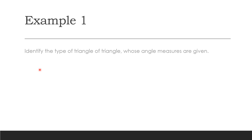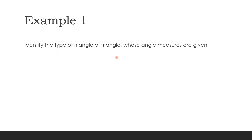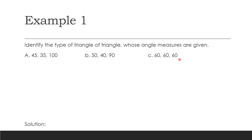Example: Identify the type of triangle whose angle measures are given. A: 45°, 35°, 100°. B: 50°, 40°, 90°. C: 60°, 60°, 60°. Solution: A is an obtuse triangle because of the 100 degrees. B is a right triangle because of the 90 degrees. C is an acute triangle and at the same time equiangular, because all three angles are equal.